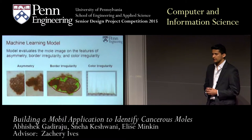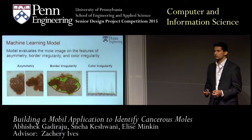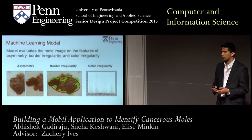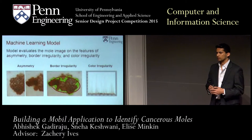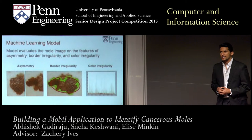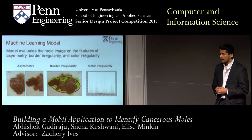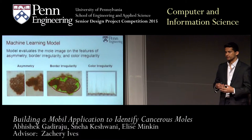After pre-processing, we evaluate the images by breaking them down into features. Doctors look for many features when pre-screening moles, but we focused on three: asymmetry, border irregularity, and color. For symmetry, we broke the image into two halves, reflected one, and did a pixel-by-pixel comparison using a distance metric like mean squared error to quantify the error between the halves — that was our symmetry metric.